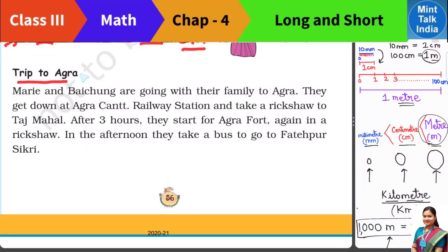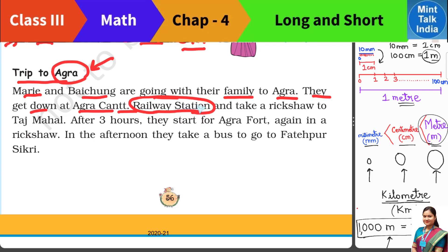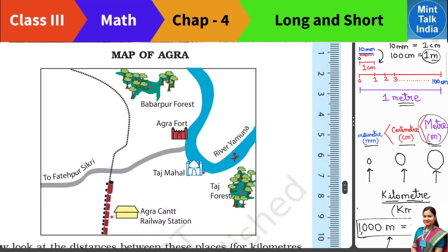Next, let us study about the trip to Agra. Agra is a district in Uttar Pradesh. Mary and Bai Chung are going with their family to Agra. They get down at Agra Cantt Railway Station. Then they go to Agra Fort in a rickshaw. In the afternoon, they took a bus to go to Fatehpur Sikri. We have a map here where we can see the large area and the smaller areas within it.